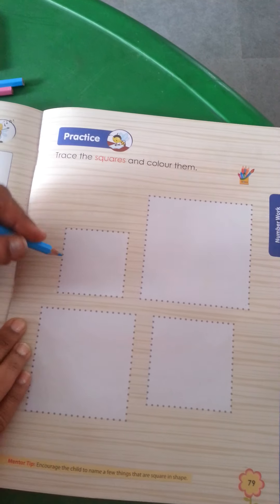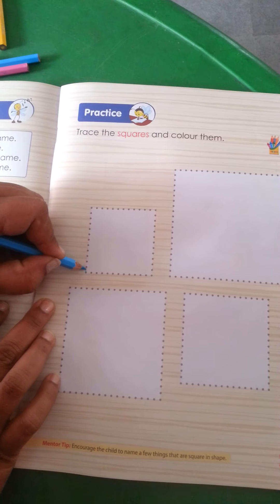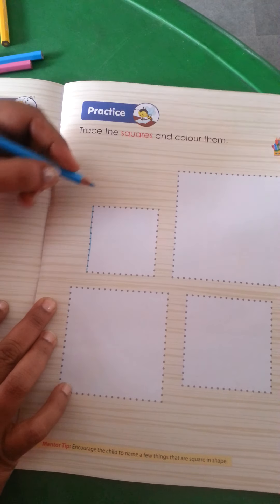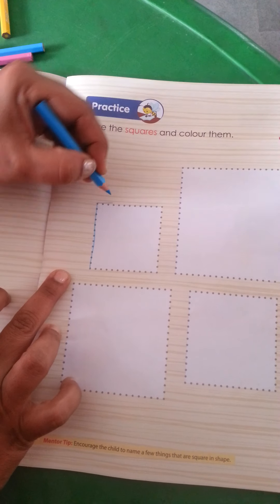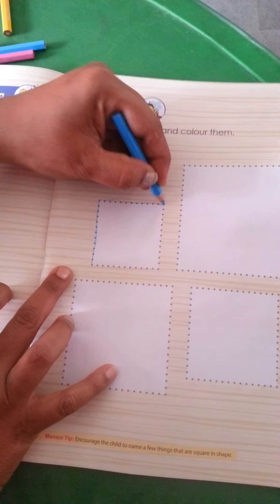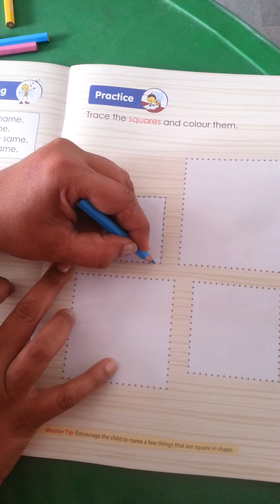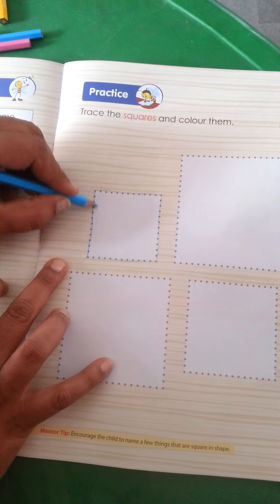So ma'am, aapka juh bhi favorite crayon hooga, aapko voh lehna hai. Jisse ki ma'am ka favorite crayon hai blue, to ma'am nye blue color liya hai. Us tarah se, aap bhi aapka favorite crayon leke, ismae is tarah se square ke this dotted line me aapko trace kerna hai aur isma color kerna hai. Like this.